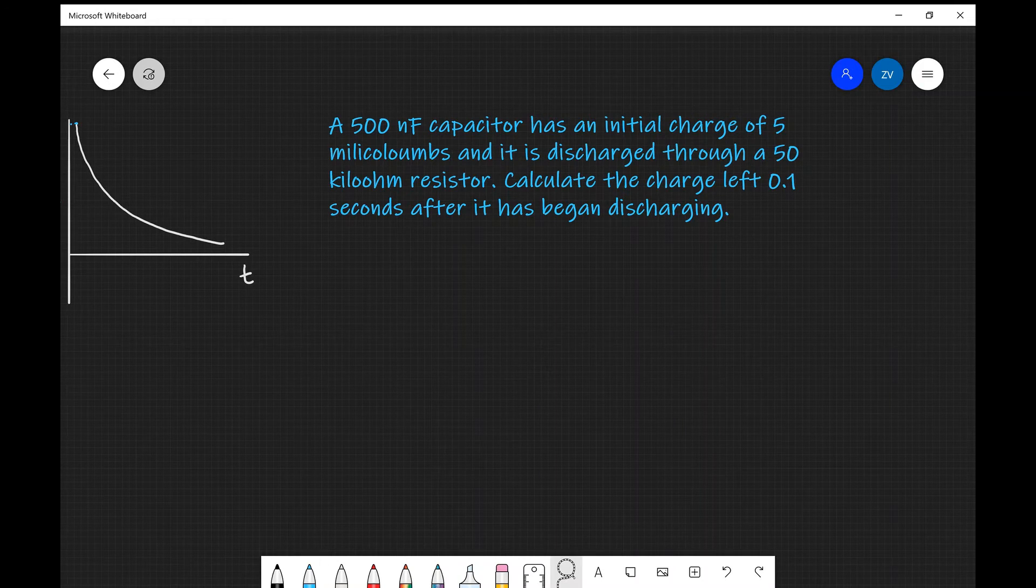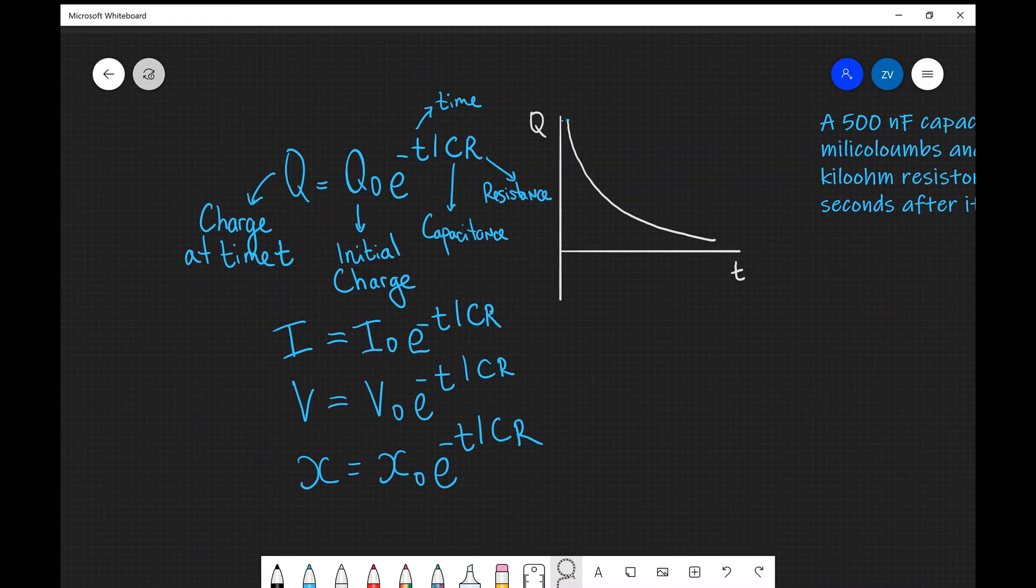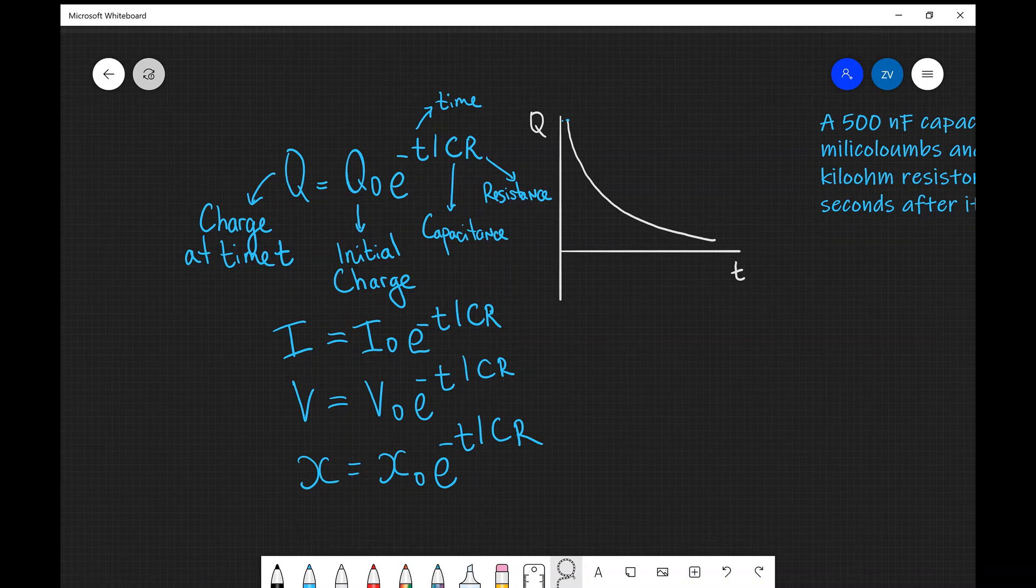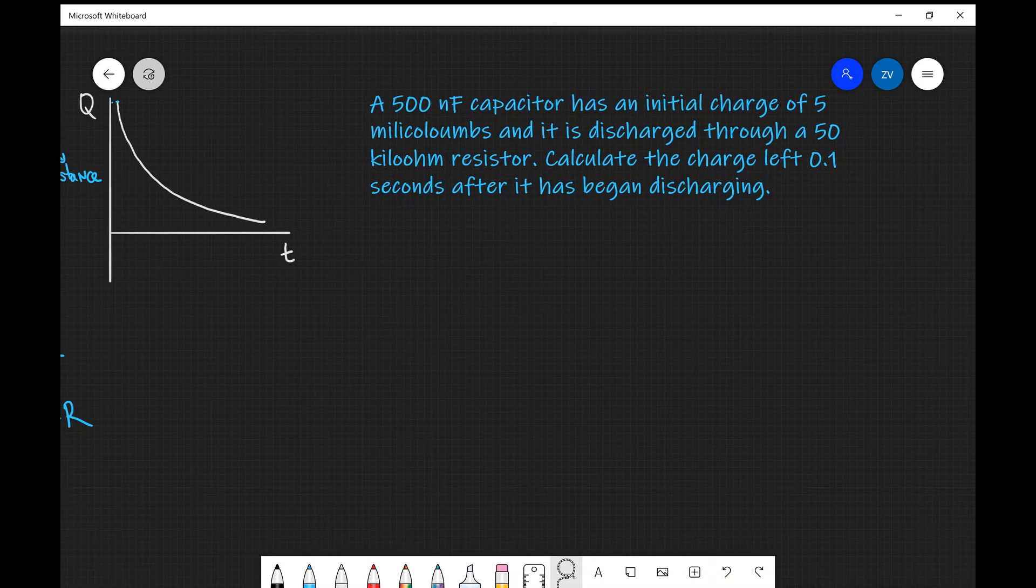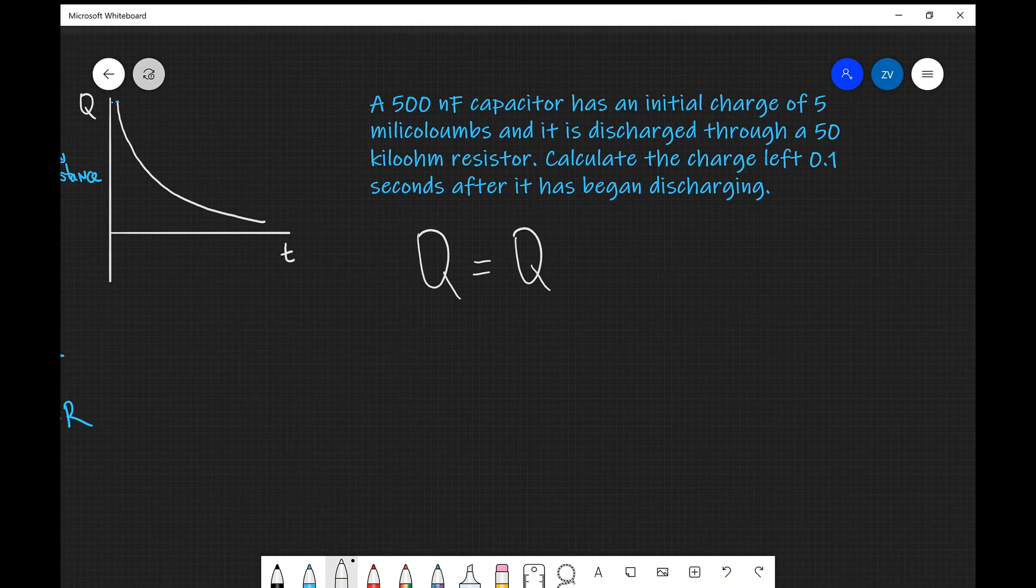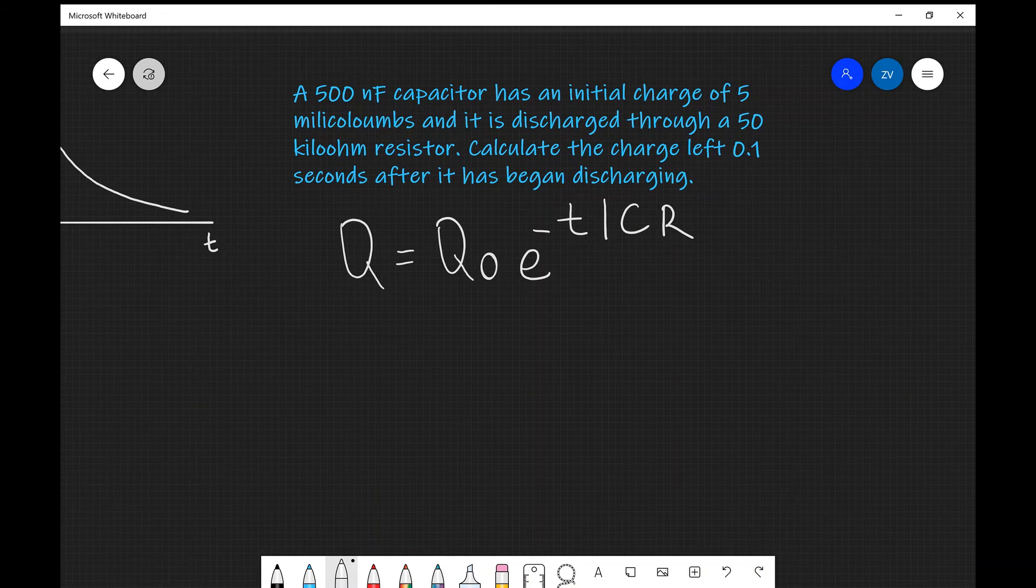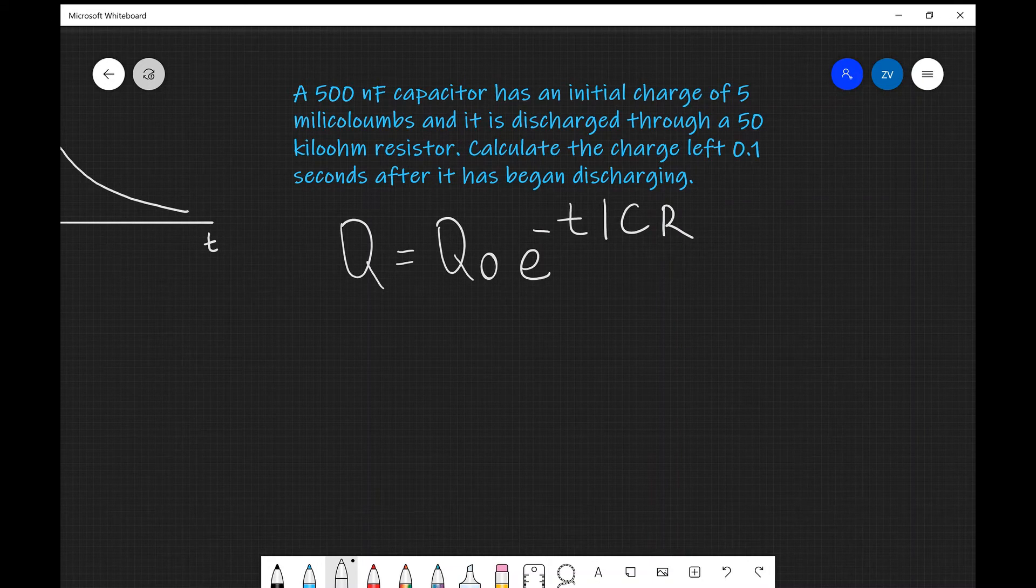Our first step is to select an equation. In this question we're talking about charge, so I'm going to select the first one. Always useful to write down equations: Q = Q₀e^(-T/CR). In this case we are looking for Q, which is the charge at time T = 0.1, so I don't need to do any rearranging and I can just start substituting some values in.